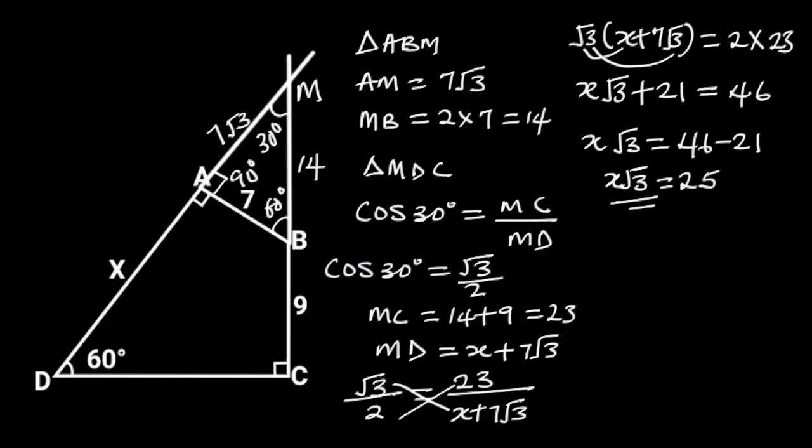Dividing through by root 3 will give us X is equal to 25 over root 3.